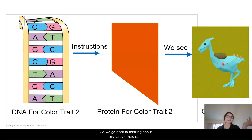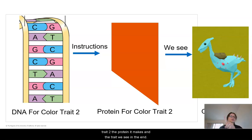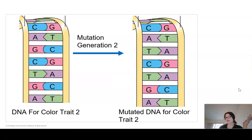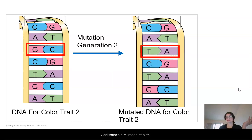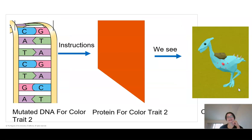If we go back to thinking about the whole DNA to protein to trait thing, this is an example of — let's say that's the DNA for color trait 2, the protein it makes, and the trait we see in the end. And let's say this ostrilope reproduces and has a baby, and there's a mutation at birth — like, it always happens. Well, this is one situation that's pretty common: you had a mutation, but the protein literally didn't change, and neither did the trait.